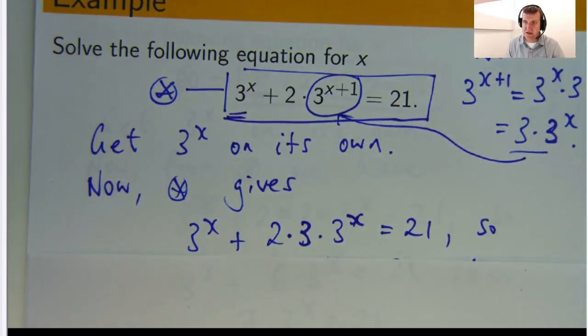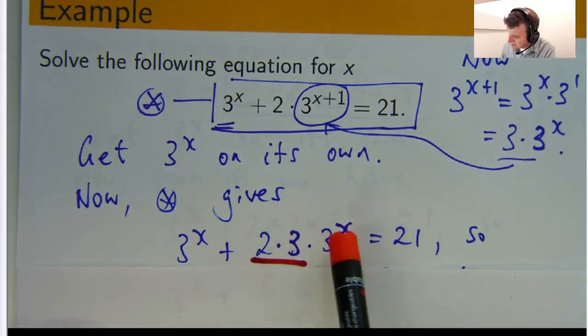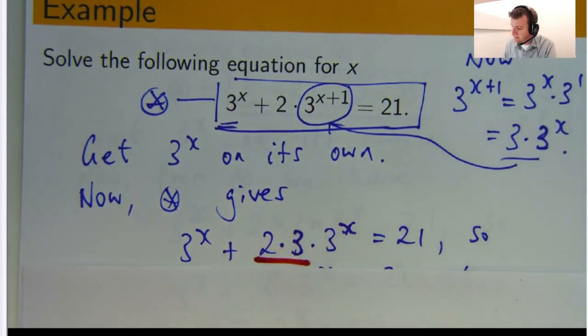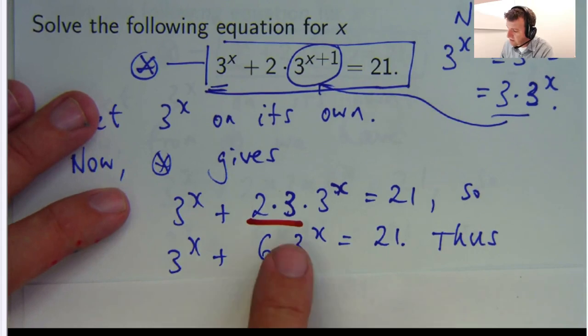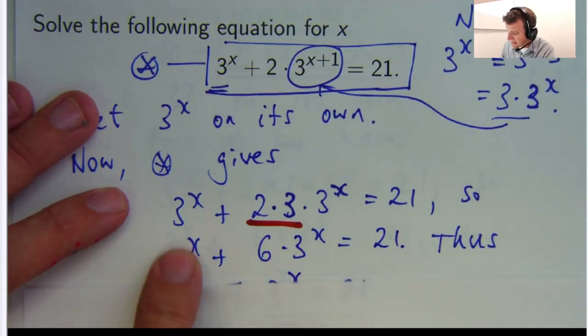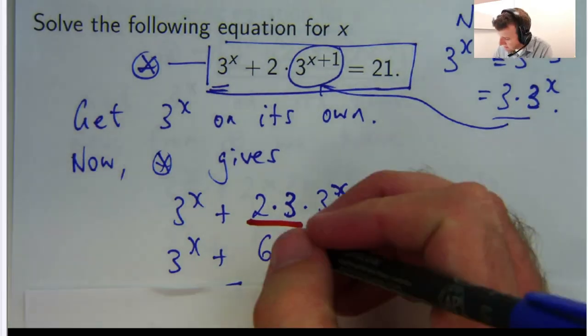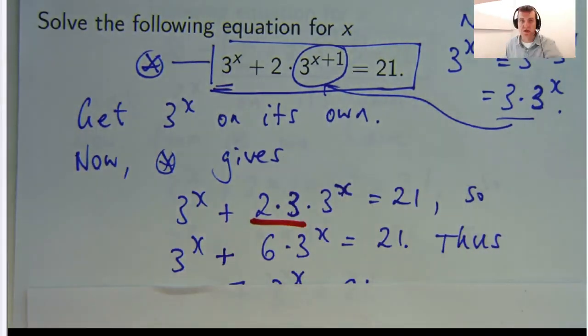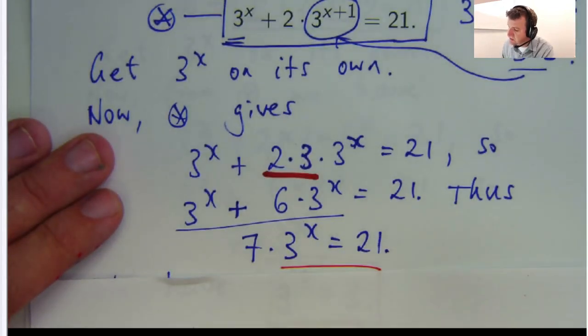Alright, so now you can hopefully see that this is just 2 times 3 times 3 to the x. So that'll be 6. And I've got 2 terms involving 3 to the x. So I've got 1 lot of 3 to the x plus 6 lots of 3 to the x. Well, it's just like adding apples. You have 1 apple and 6 apples. You add them together and you get 7 apples. So these two terms here will give you 7 times 3 to the x.